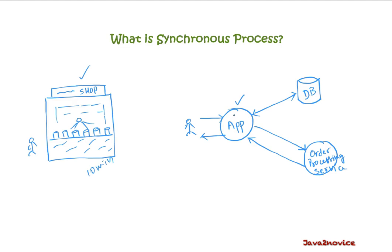No matter what the response time is, you want to get your task done and get the acknowledgement then and there. Now let's say your application is taking 10 seconds to process your request. In order to process your request, first it is validating your input, storing them into the database, and registering a request with the Order Processing Service. Order Processing Service is another microservice that your application is internally talking to. On successful confirmation from the order processing service, your application issues an acknowledgement back to you.